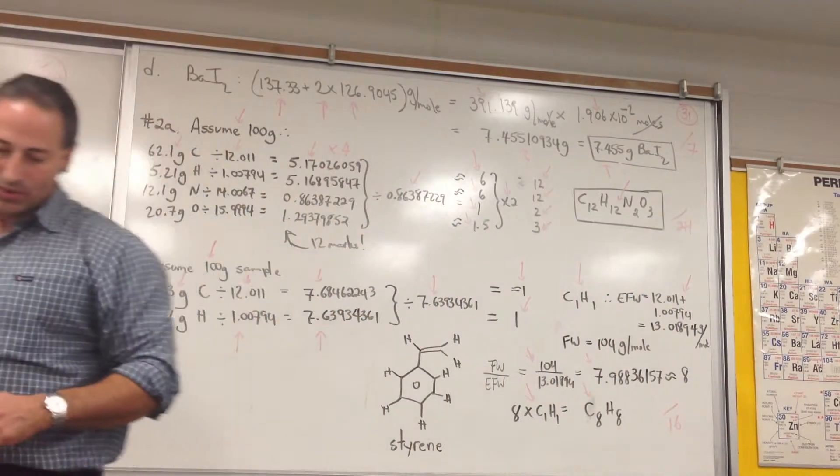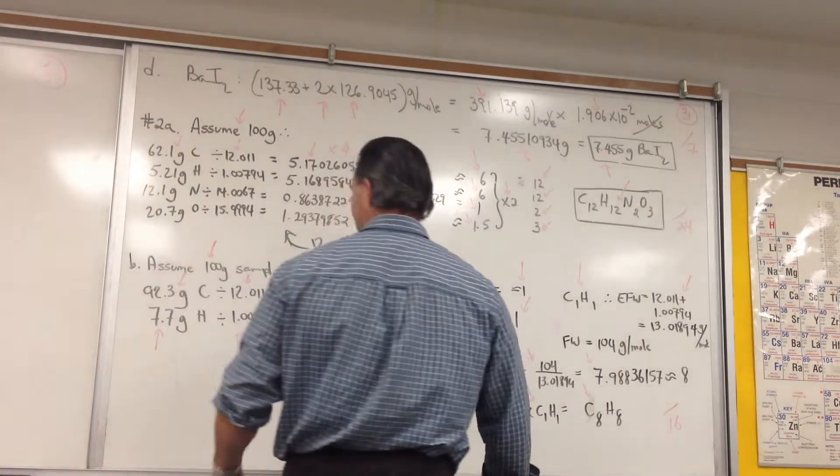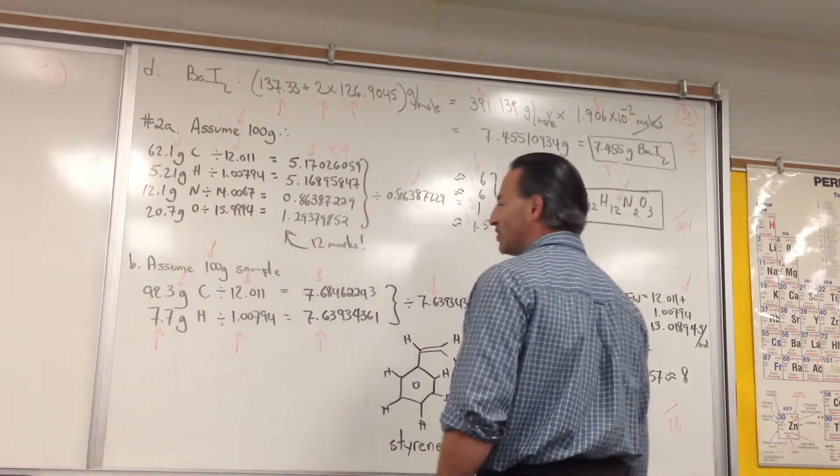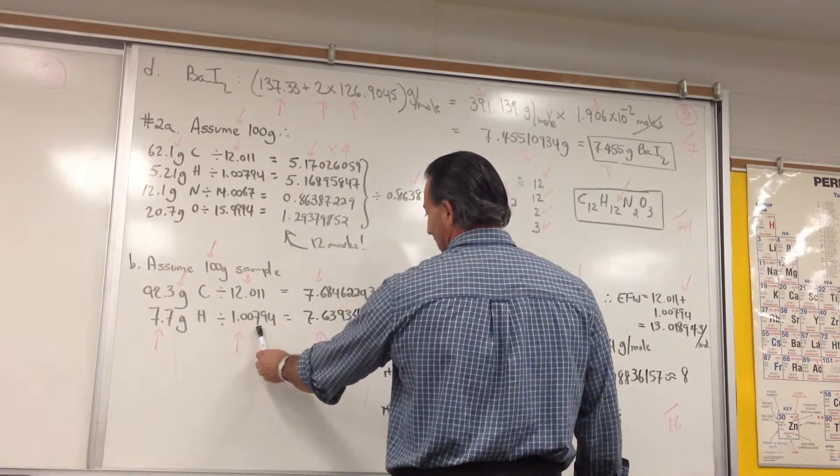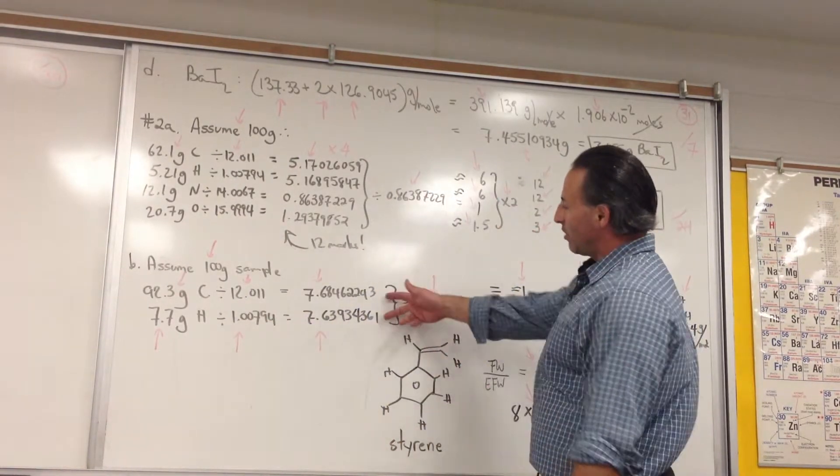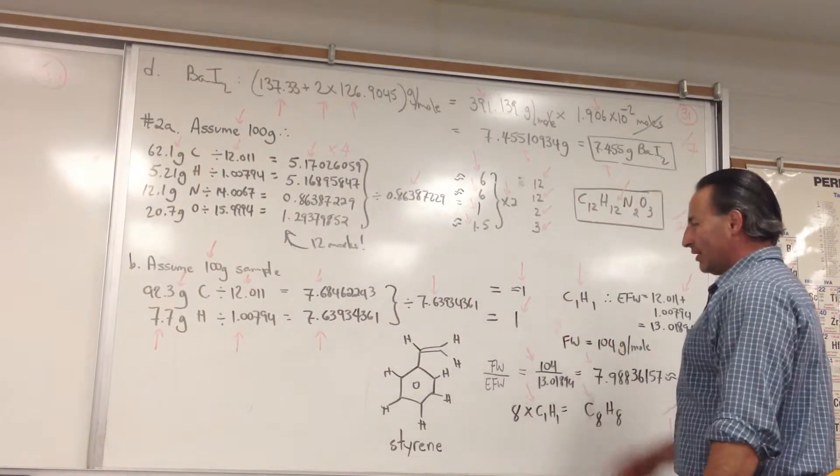In part B of number 2, the question is, what is the empirical and molecular formula of styrene, which contains 92.3% carbon and 7.7% hydrogen, and has a molar mass of 104 grams per mole. 92.3 grams of carbon, 7.7 grams of hydrogen, divided by the molar mass of carbon, divided by the molar mass of hydrogen. Here's the mole ratios you get. You'll see they're almost similar. When I divide by the lower number, which is this one, they're both very close to 1.